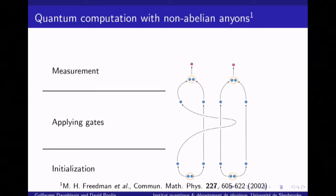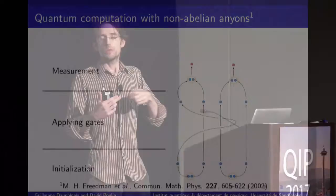Once we have these excitations, we can braid them — move them around each other while keeping them far apart — and this will apply gates. The braiding has a non-trivial effect on the fusion space. Once we've applied all the gates, which correspond to some sequence of braidings, we bring pairs of anyons together, fuse them, and observe the resulting charge. One key interest of this model is that it's insensitive to details: the gates depend only on the topology of the space-time trajectory, not on the details of how they are braided.